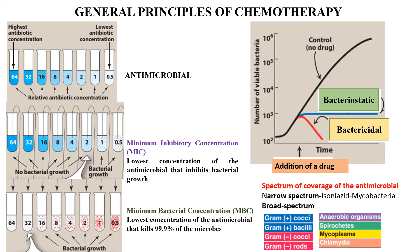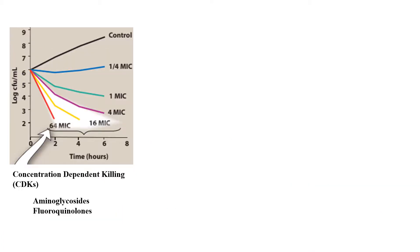The spectrum refers to the coverage of the antimicrobial. If it covers fewer organisms, it is called a narrow spectrum antibiotic — for example, isoniazid, which is effective against Mycobacterium only. If it covers most microbes, it is a broad spectrum antibiotic — for example, tetracyclines.